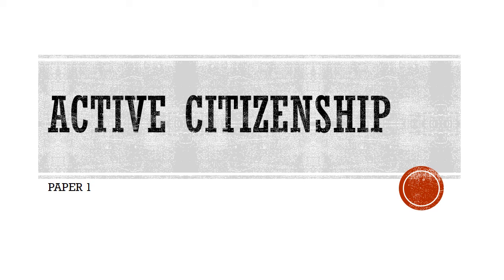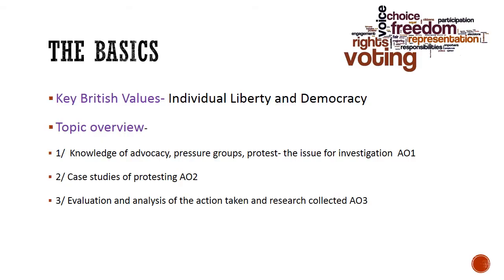We're now moving on to our last topic, which is on active citizenship. There is nothing new to learn here. In your active citizenship module, it's on paper one and the whole thing is worth 40 marks. The first 16 marks are on general protesting, general campaigning, and general being an active citizen. In the exam, throw in as many British values as you can — individual liberty, because people who are protesting are following their thoughts and wishes, being an individual.